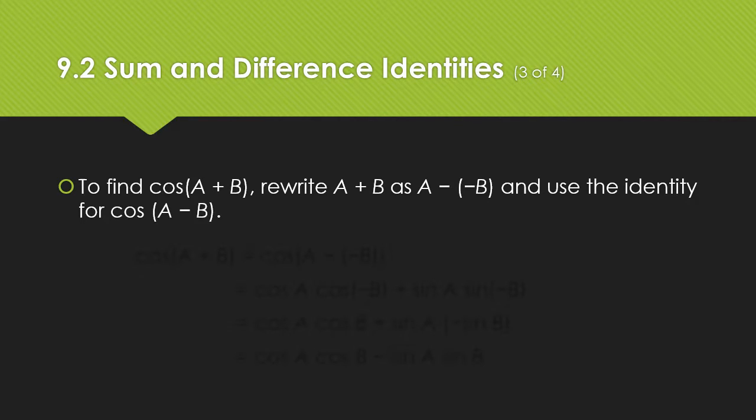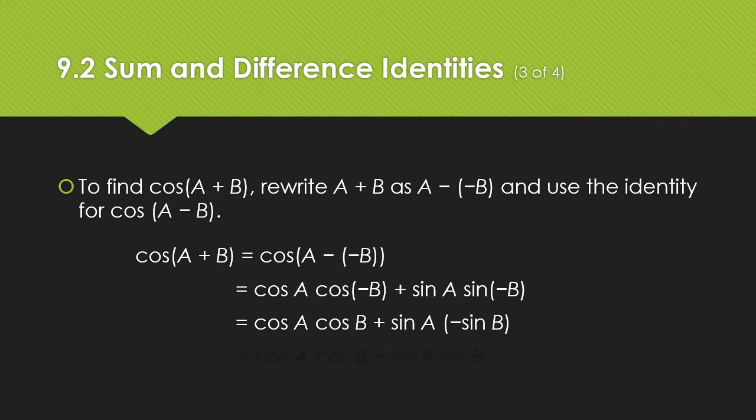To find the cosine of A plus B, we would rewrite it as A minus negative B, and then use the identity we just got for cosine of A minus B. We remember that the cosine of the negative of an angle is the same as the cosine of the angle. For the sine of a negative angle, it's negative sine of that angle. Then moving that negative out in front, we end up with this for our identity.